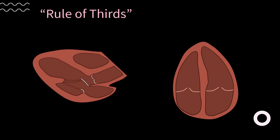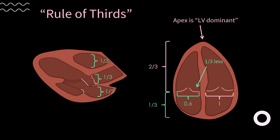We will now discuss normal cardiac proportions, referred to as the rule of thirds. In the parasternal long axis view, a normal heart should have an equal left atrium, aortic valve, and right ventricle — we eyeball these as approximately equal size. In the apical four-chamber view, two-thirds of the heart should be the ventricles and one-third the atria. At the mitral annulus, the tricuspid annulus should be about one-third less. And the apex of the heart should be dominated by the left ventricle, not the right ventricle.